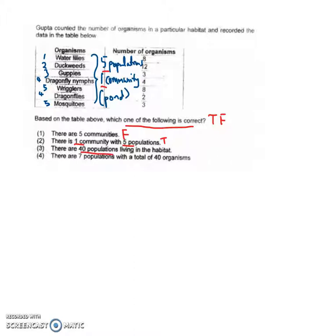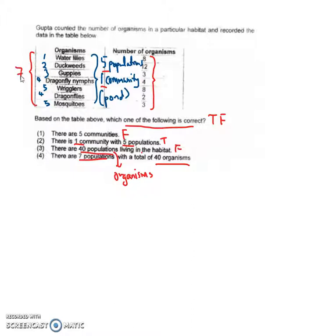'There is one community with five populations' — this is true. 'There are 40 populations living in the habitat' — this is false; 40 is the total number of organisms, not 40 populations. 'There are seven populations with a total of 40 organisms' — this is false, because you cannot consider dragonfly nymph and dragonflies as two separate populations.